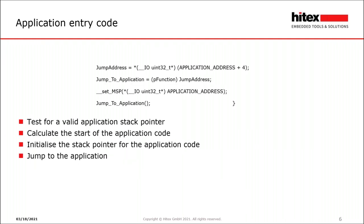To get out of the bootloader and into the application, we need to examine the application image. The first four bytes contain the initial main stack address — during hardware reset the processor normally reads this and sets up the main stack pointer. When jumping from the bootloader to the application in software, we read the first four bytes and force that into the main stack pointer. The second four bytes is the address of the reset handler, which becomes the entry point. So we do a software simulation of the hardware reset normally performed by the Cortex microcontroller.